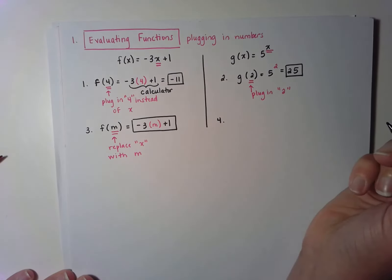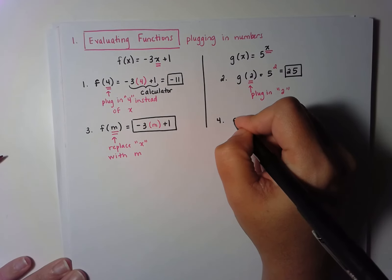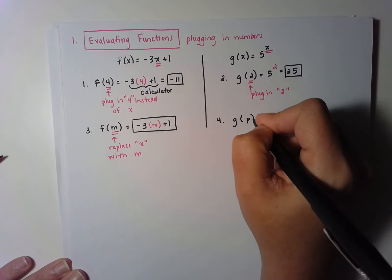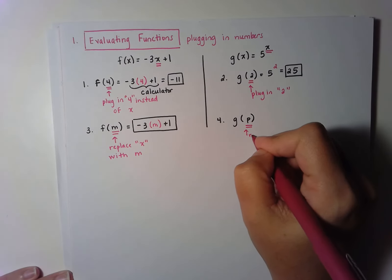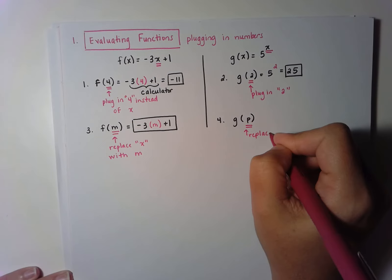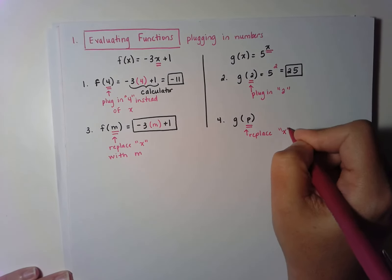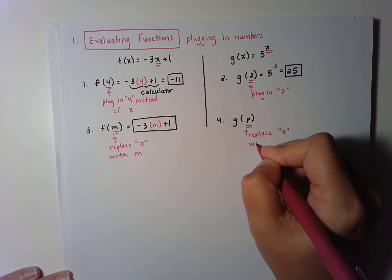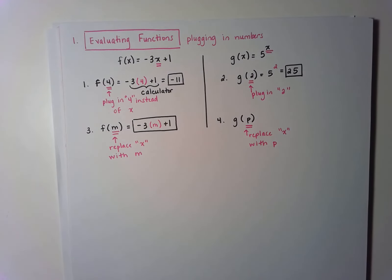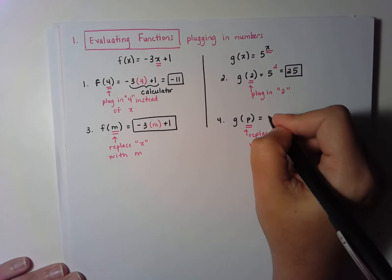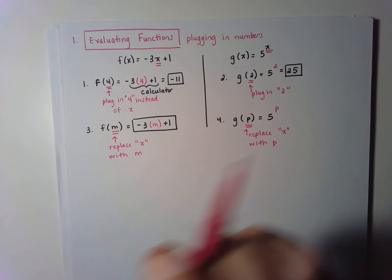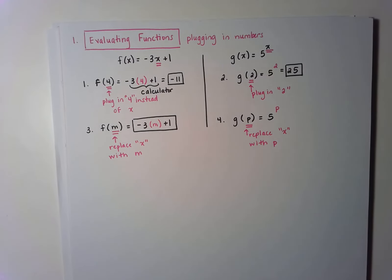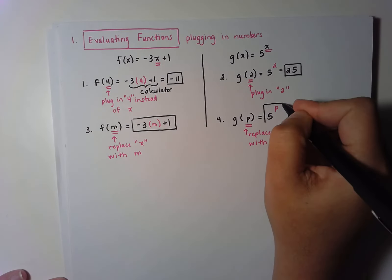Since I can't type this in and get a number, that expression is my answer. I could do the same thing when x is an exponent — I could say find g of p, which would mean replace the x with p. So I would have 5 to the p power. Once again I can't type that in on my calculator, so that would be my final answer.